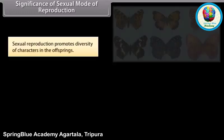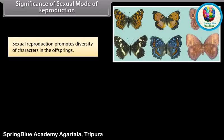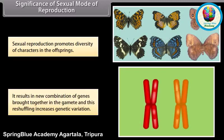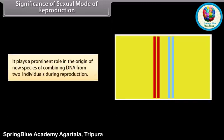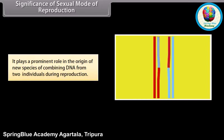Sexual reproduction promotes diversity of characters in the offspring. It results in new combinations of genes brought together in the gamete, and this reshuffling increases genetic variation. It plays a prominent role in the origin of new species by combining DNA from two individuals during reproduction.